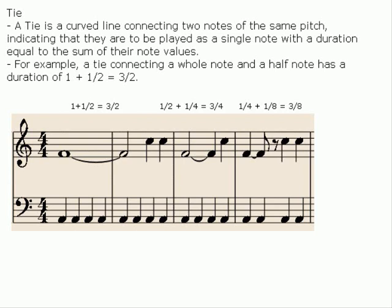Tie. The tie is a curved line connecting two notes of the same pitch, indicating that they are to be played as a single note with a duration equal to the sum of their note values. For example, the tie connecting the whole note and half note has a duration of 1 plus 1 half equals 3 halves.